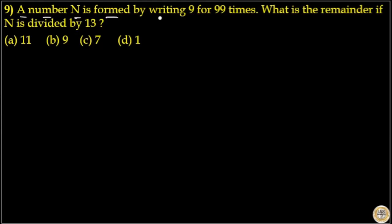A number N is formed by writing 9 for 99 times. What is the remainder if N is divided by 13? Here N is 9 repeated 99 times, so we have to find out the remainder of N by 13.